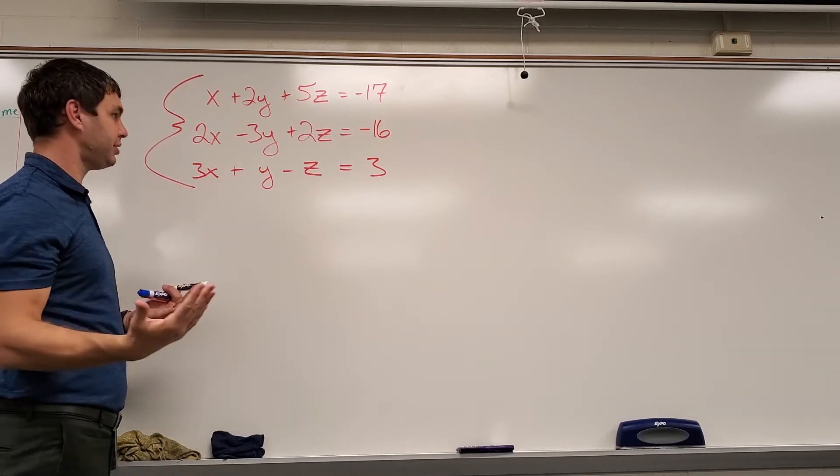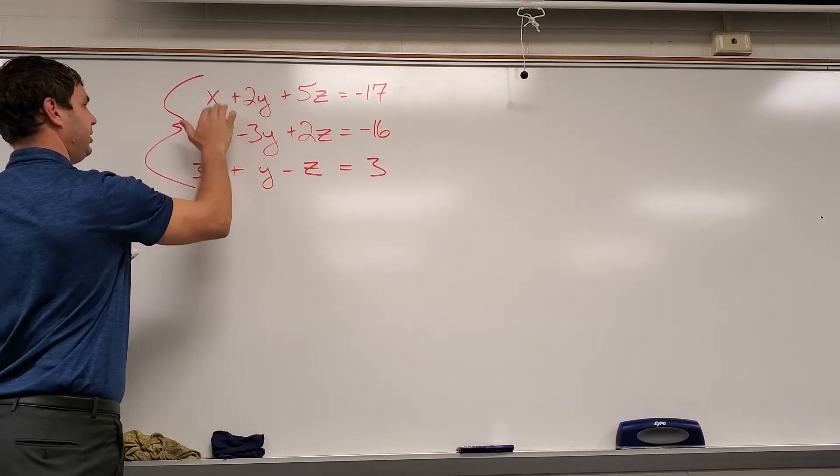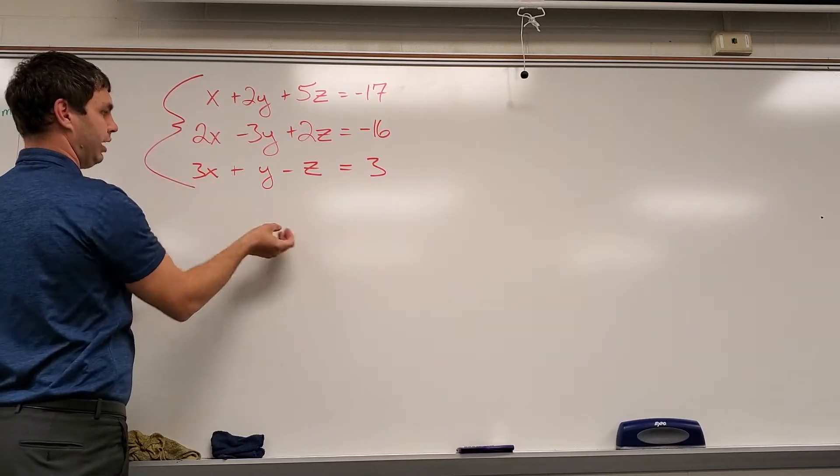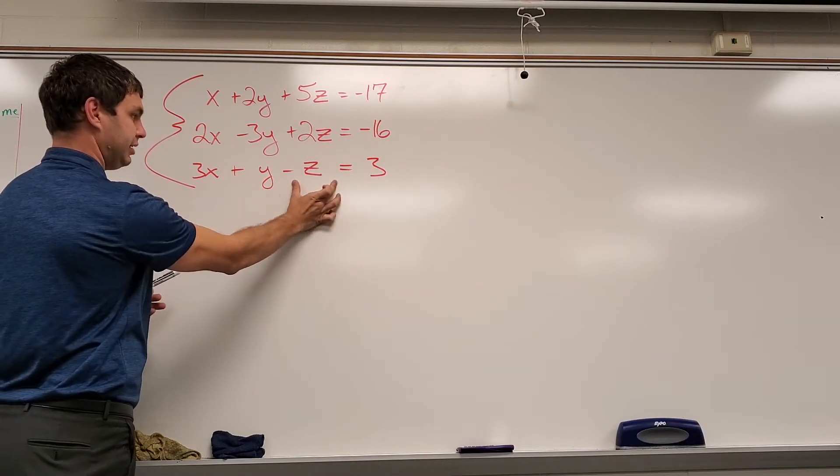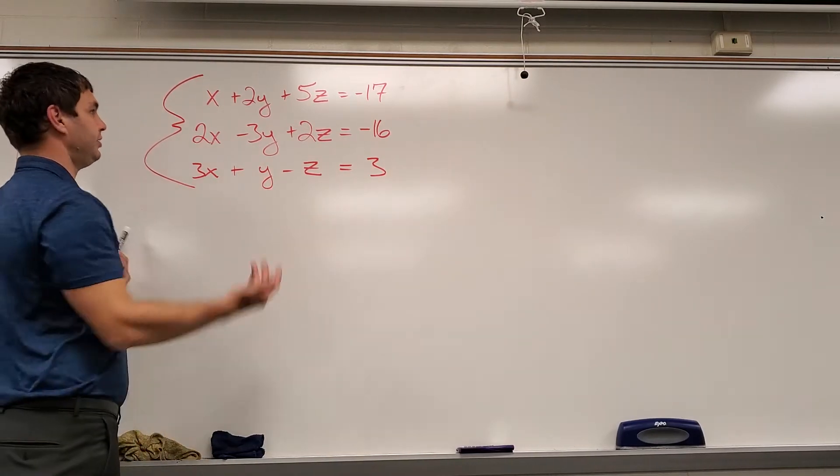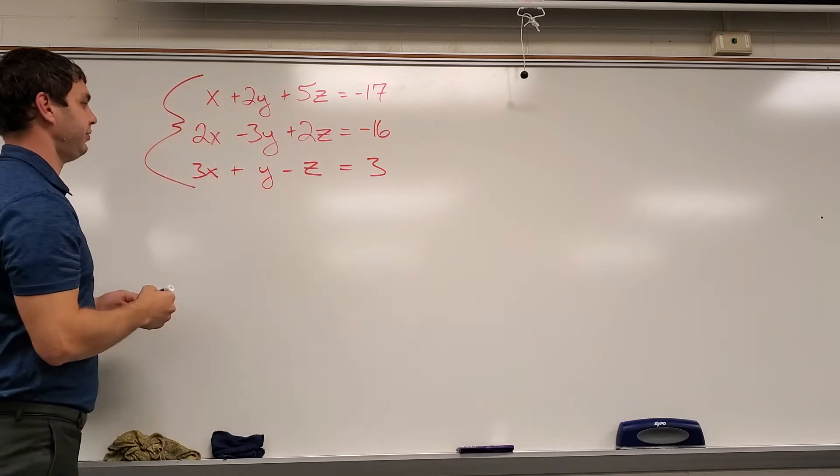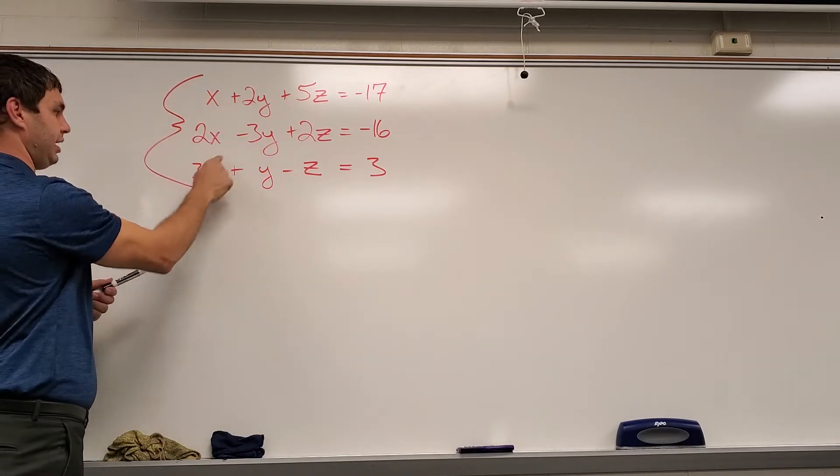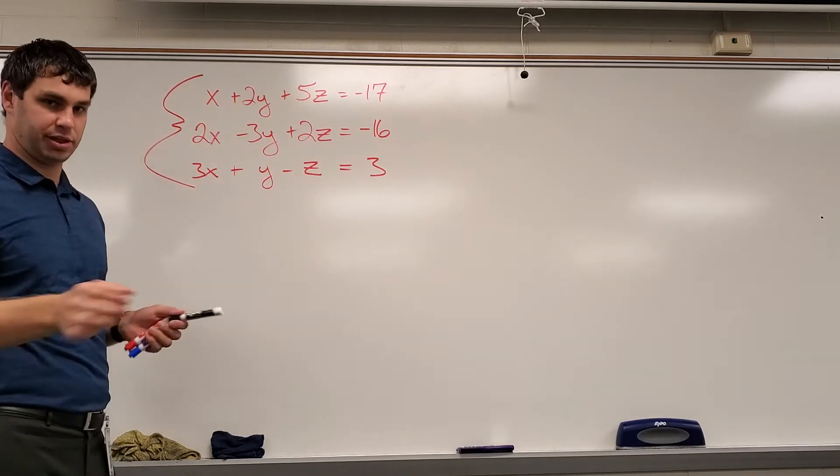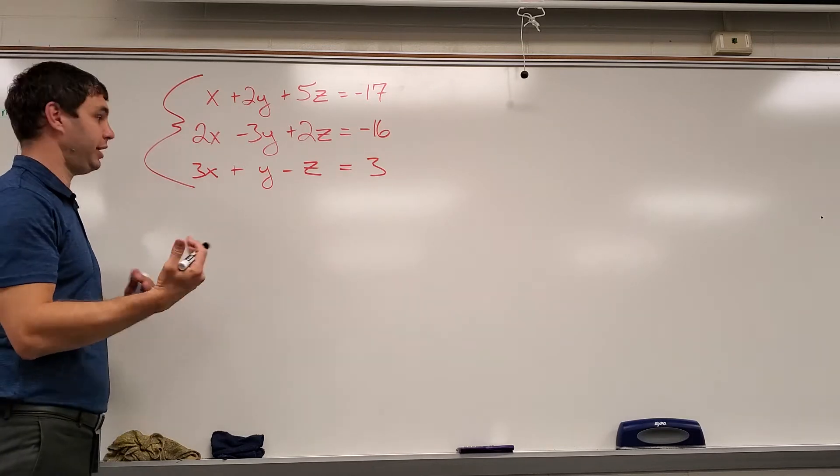What jumped out to me is this x up here, it's by itself, or I see this y or z down here by itself. And since this is first, I'm just going to use this one. Looking at the other variables with it, I have a 2x and a 3x. That won't be too hard to multiply by just 2 and 3, or negative 2 and negative 3.